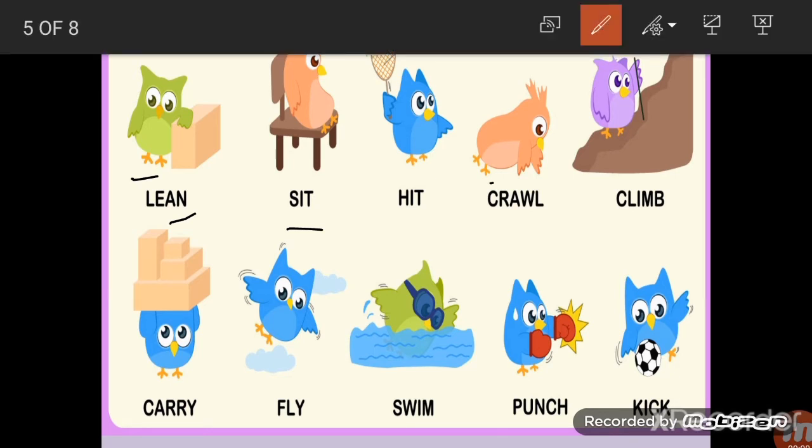Next we have crawl. Crawl means to walk on your knees like small kids do. As you have seen in your houses, your younger brother who is not able to walk crawls. They walk on their knees, they are not able to walk on their legs. They move on their knees or hands on their knees like this owl is doing.